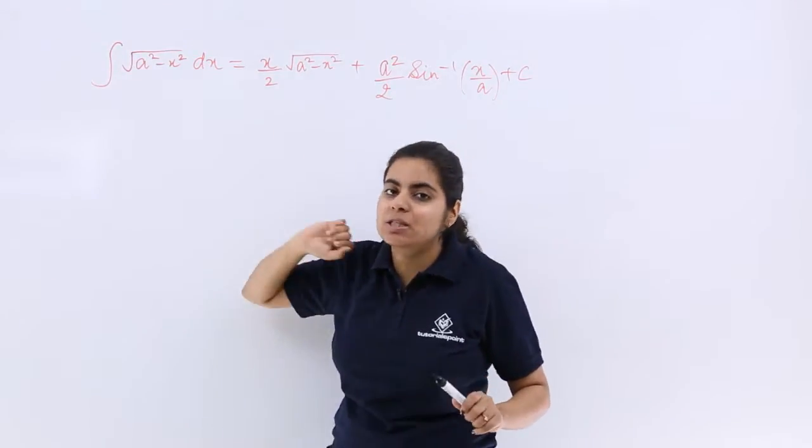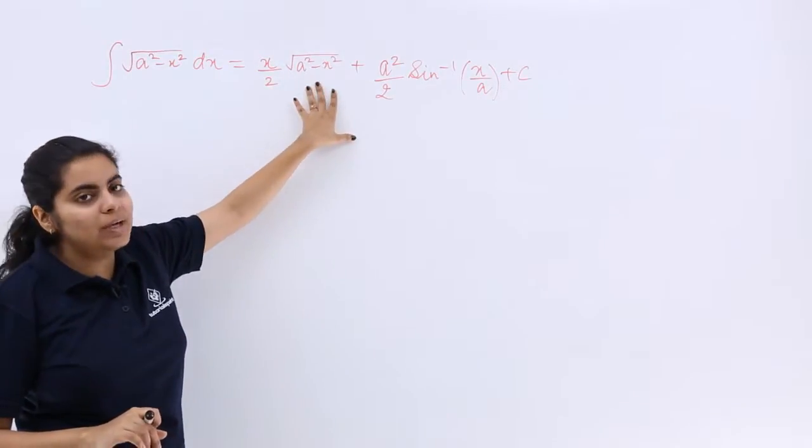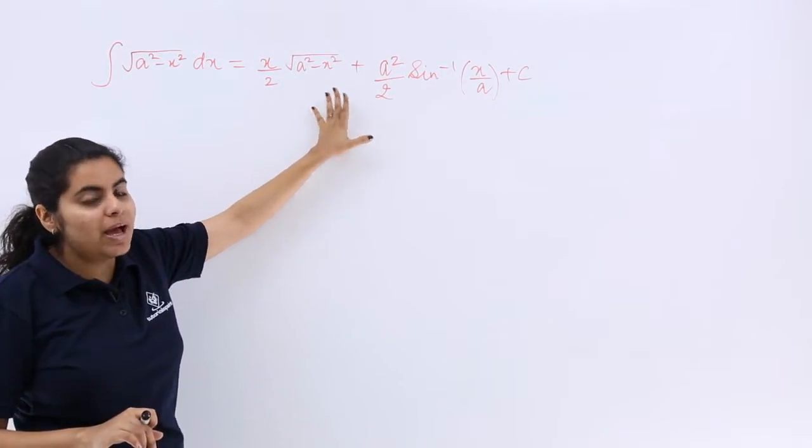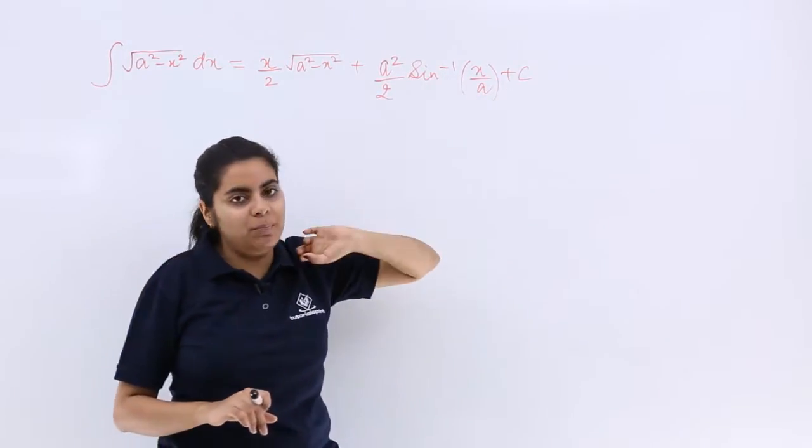So what is the integration with respect to x? It is given by the formula: (x/2)√(a² - x²) + (a²/2)sin⁻¹(x/a) + c.